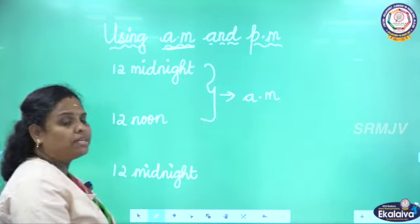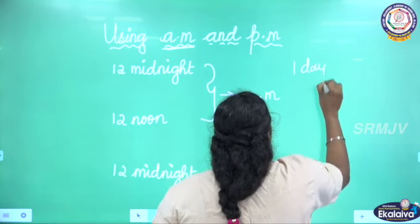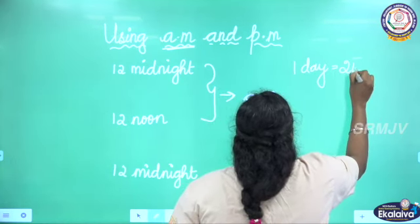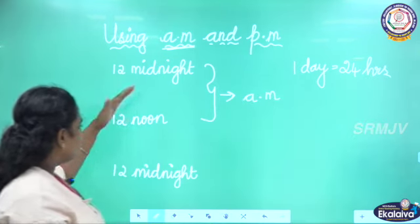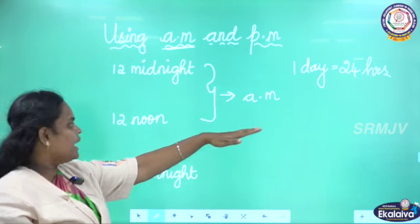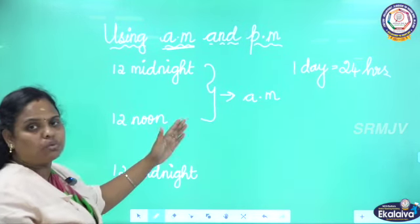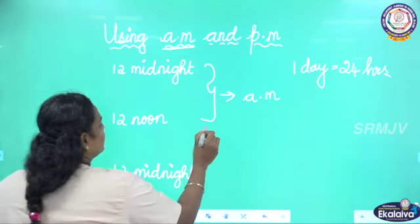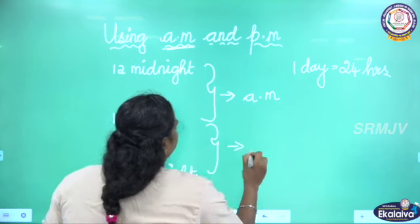1 day is equal to 24 hours. This is the first part: 12 midnight to 12 noon we say AM. Then afternoon 12 o'clock — that is 12 noon — to 12 midnight we say PM.